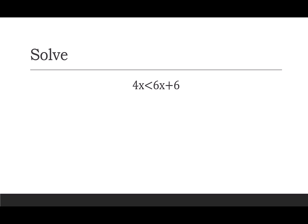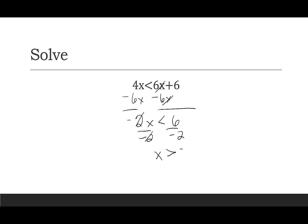Now that we've got the hang of one-step problems, let's do multiple steps. The idea is to collect like terms: put variables on the left, constants on the right, and at the end we want x to have a coefficient of 1. I'm going to start by moving the 6x to the left by subtracting 6x from both sides. 4x minus 6x is negative 2x, and that is less than 6. Now I divide by negative 2, but I need to remember to flip the sign. The negative 2 cancels, giving me x. Less than becomes greater than, and 6 over negative 2 is negative 3. On my real number line I place negative 3, put an open circle, and shade to the right. In interval notation I start at negative 3 and go to infinity with open parentheses.